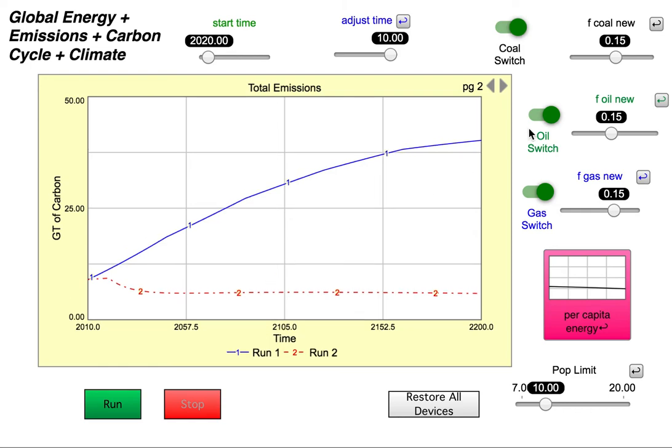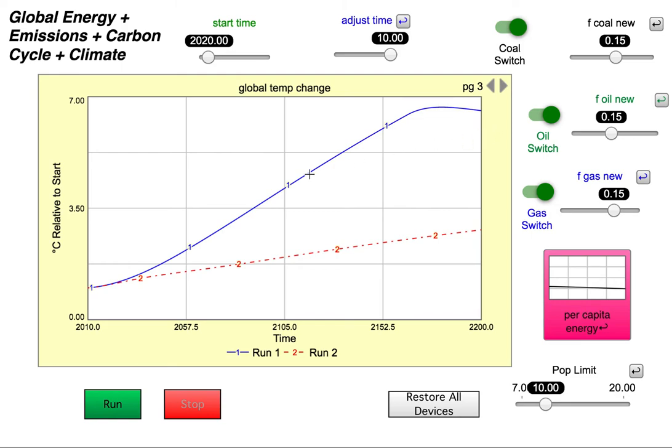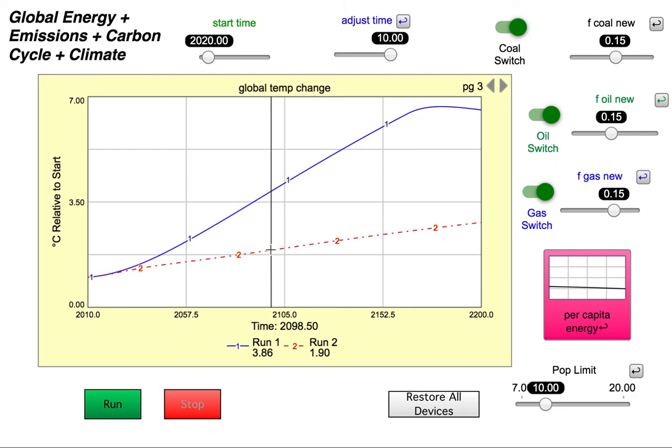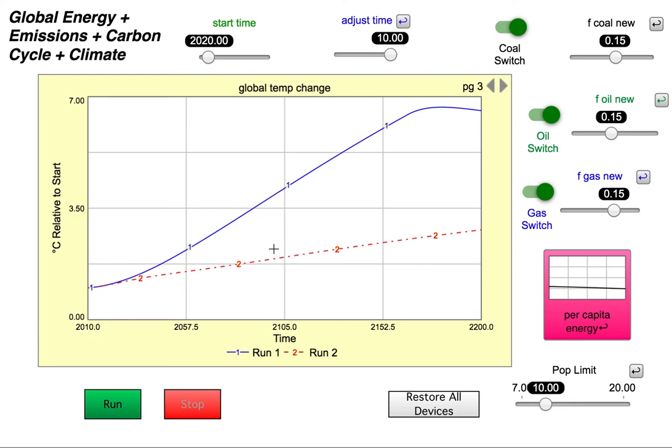Now what kind of a temperature change does that cause? That's question number seven. So we can look on page three of the graph pad here. So the temperature change in the year 2100 is 1.91 degrees as opposed to 3.92 for the control version. So that's your answer to number seven.